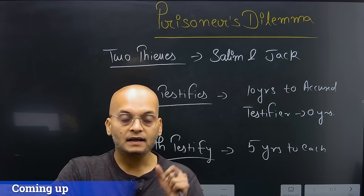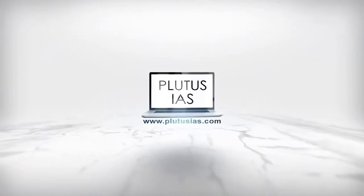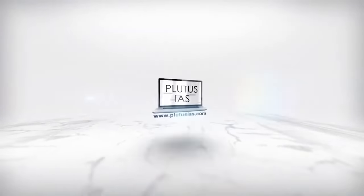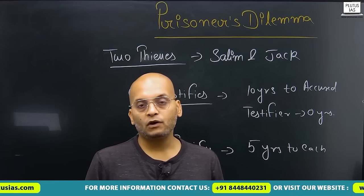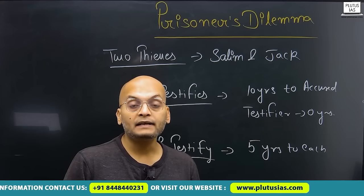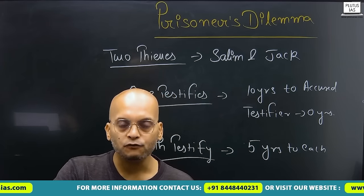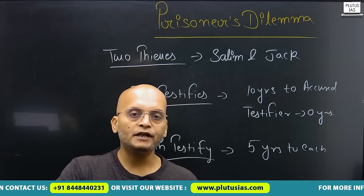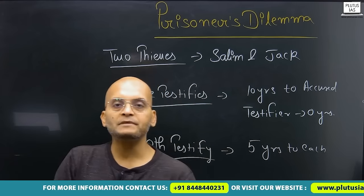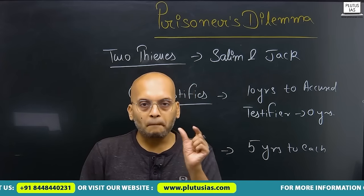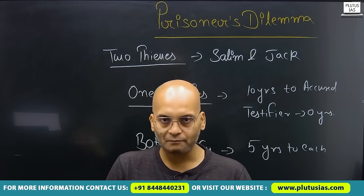Hello everyone, good morning. Last time we discussed a very important and interesting topic of economics — game theory. In game theory we observed that in a zero-sum game, the principle of maximin and minimax was being followed. According to that principle, the profit of one firm will be the loss of another firm, and vice versa. But this condition is not always fulfilled in real life.